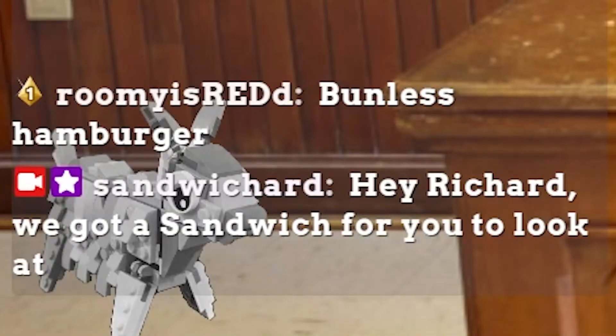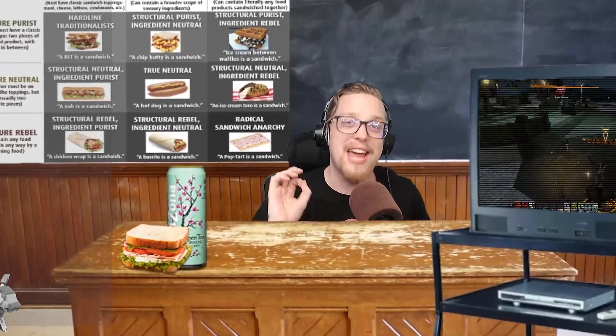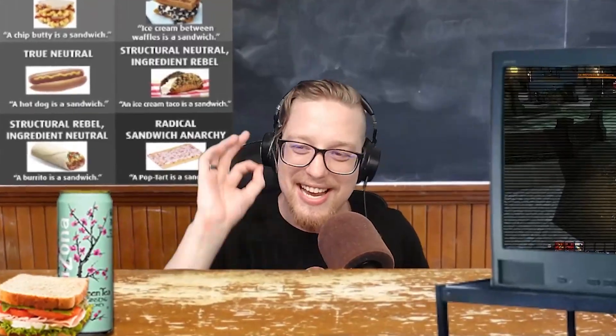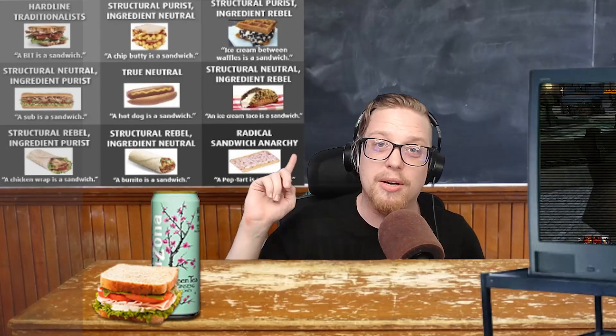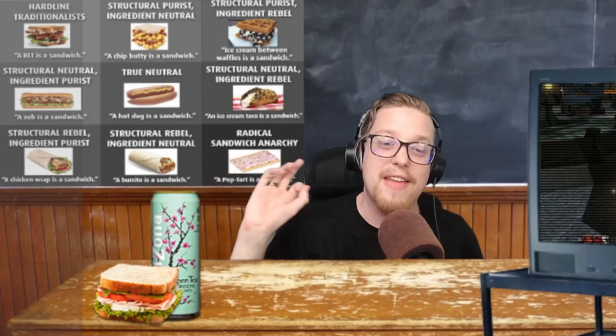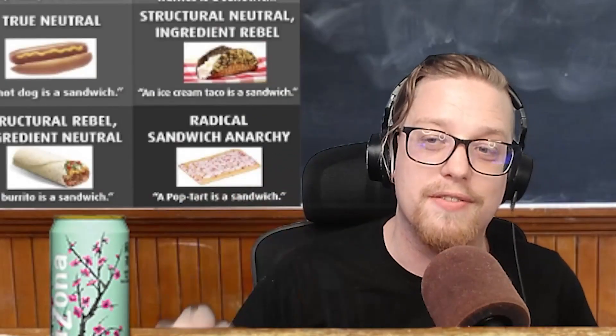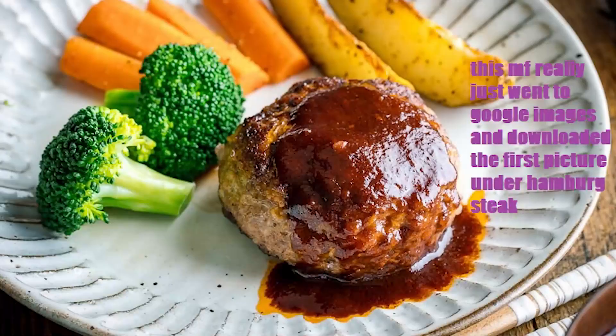Hey Richard, we've gotten a sandwich. A bunless hamburger is radical sandwich anarchy because that exists and it's called hamburg steak. That was popular before the invention of the hamburger, before the turn of the century — actually right around the late 1800s. A bunless hamburger was a hamburg steak and that existed for years prior to the invention of the actual hamburger, and it's still a very popular thing to do in Japan.